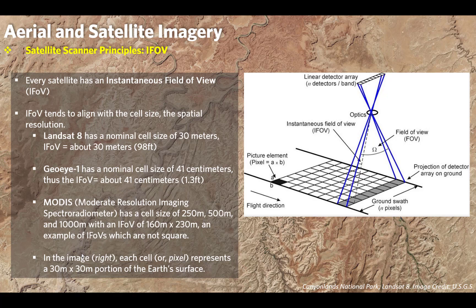With some newer satellites, they can move them farther out in orbit or closer in. As you move closer, the instantaneous field of view becomes smaller too. The geometry of the path changes, so you can gather higher resolution the closer you are to your subject. You'll see that some satellite platforms' instantaneous field of view varies depending on what altitude they're flying at.